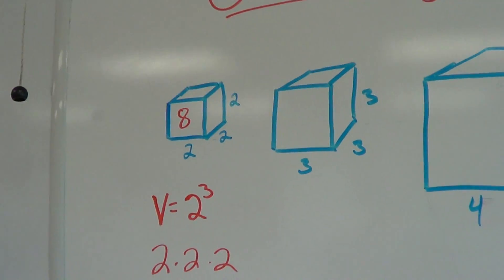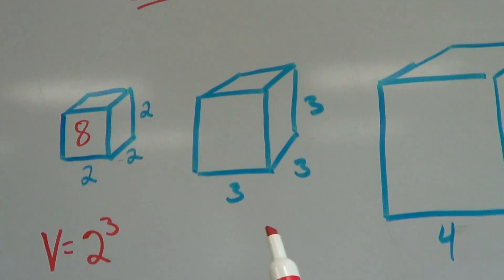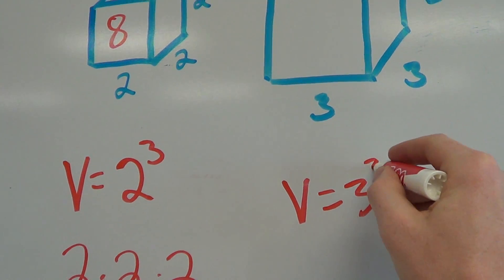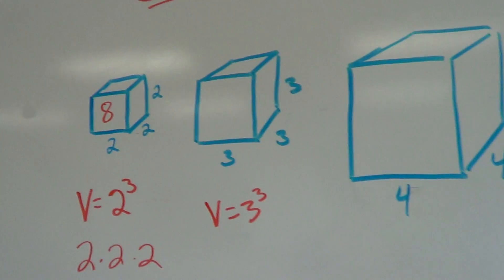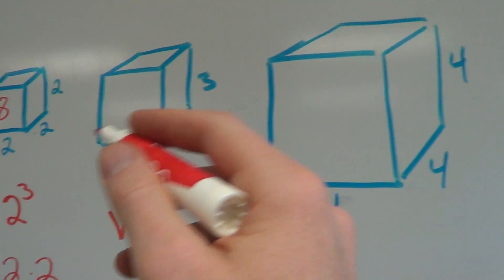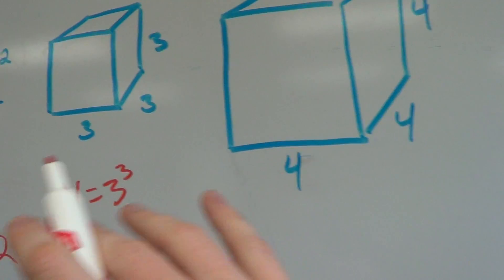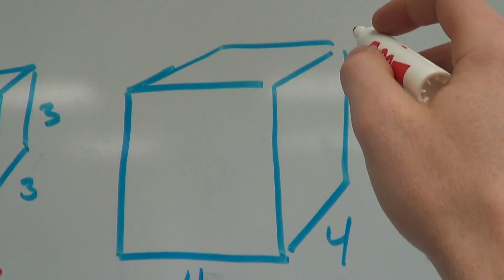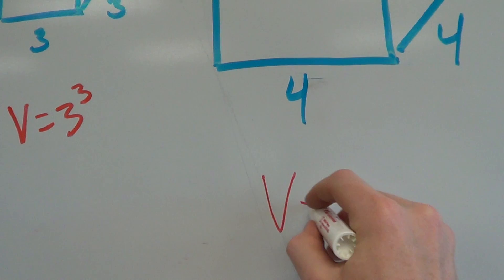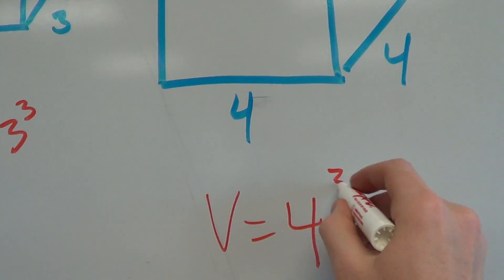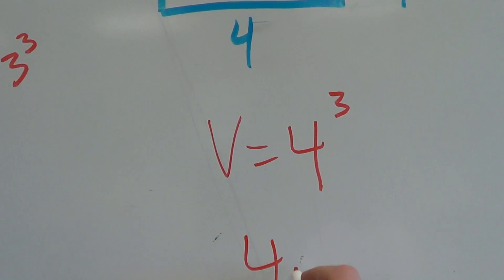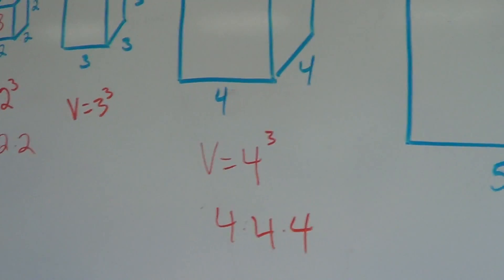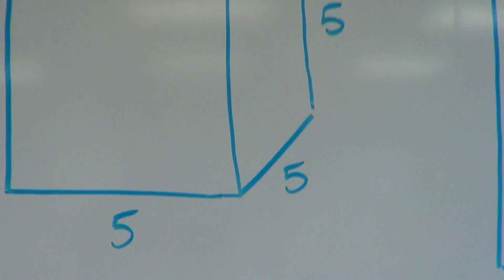So 8 is a perfect cube. And then I have 3 times 3 times 3, or 3 cubed. I'm going to show you on a calculator how to compute these — I know what they are because I have the first few memorized, but I'll show you how to find it on a calculator. So then we have 4 times 4 times 4, so that's 4 cubed. And then I have 5 cubed.